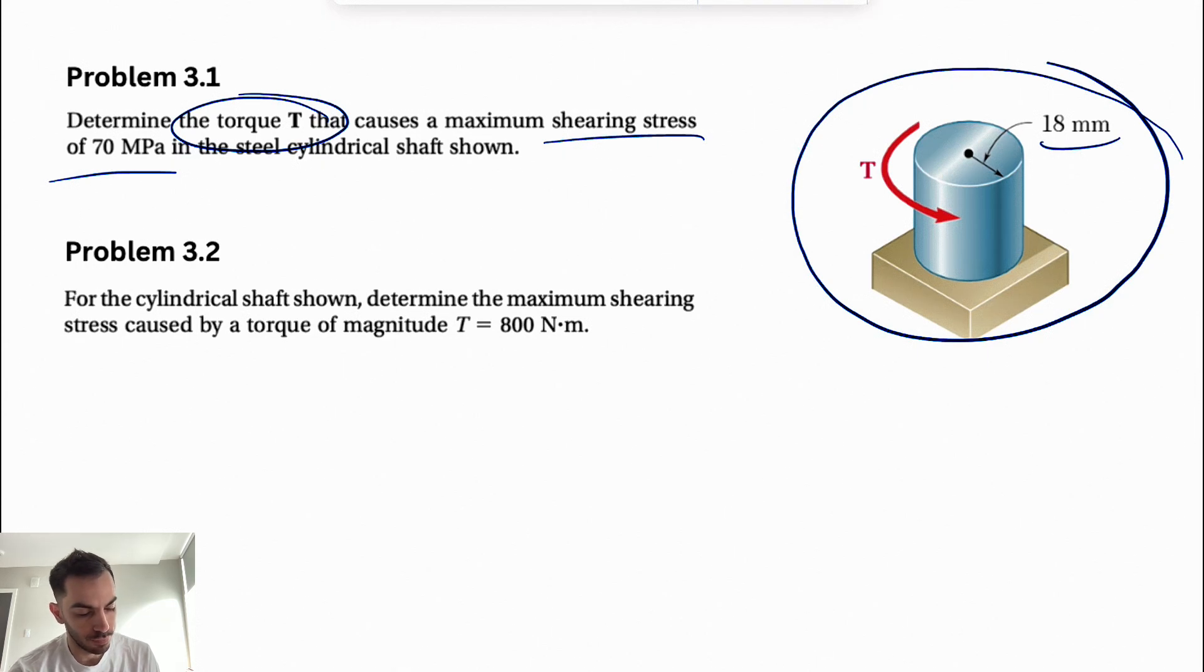If we look at this cylinder on the right hand side, we can see that we have the radius of 18 millimeters. We'll use the elastic torsion formula that is in the textbook.